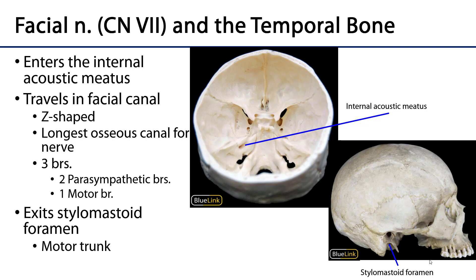The facial nerve first enters the temporal bone through the internal acoustic meatus, on that lateral surface of the petrous portion of the temporal. CN7 is entering with CN8, so facial and vestibulocochlear are going in through that opening. The facial nerve then takes a turn and enters into an osseous canal called the facial canal. The facial canal is Z-shaped and it is the largest osseous canal for a nerve.